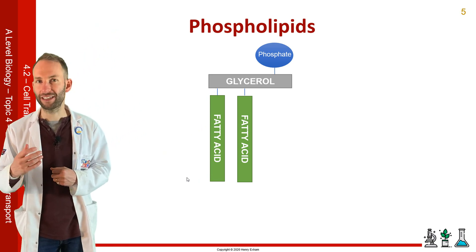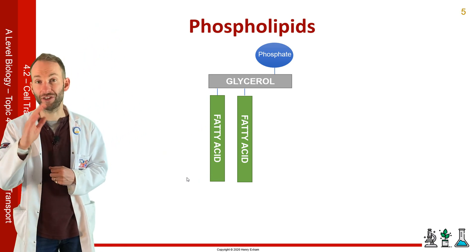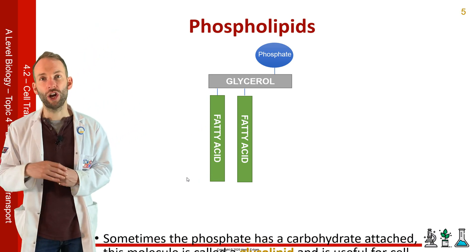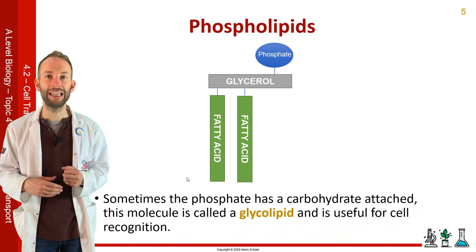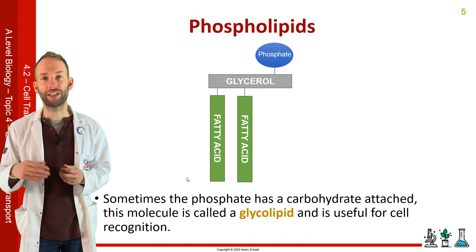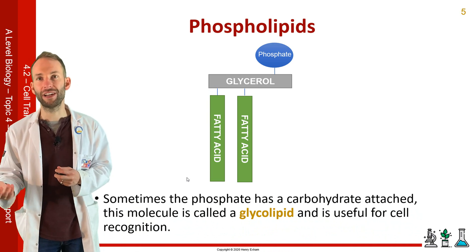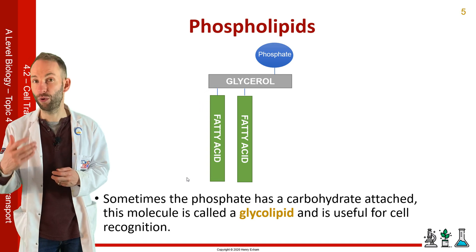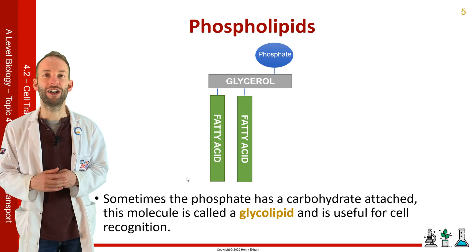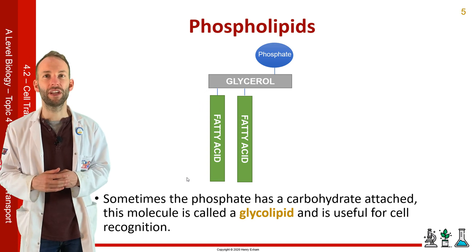Sometimes the phosphate can have a carbohydrate attached to it, and we call this a glycolipid. Glyco for the carbohydrate and the lipid for the fatty bit. And this is important in cell recognition.